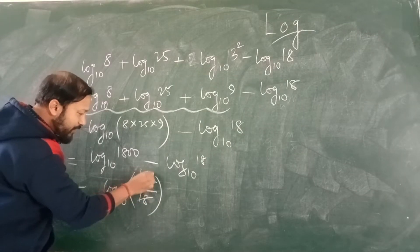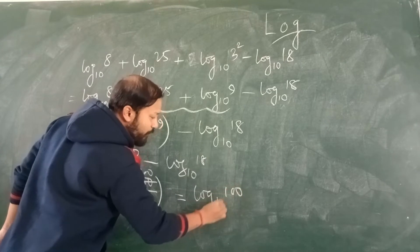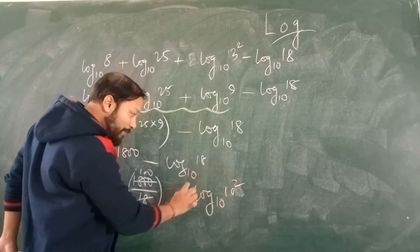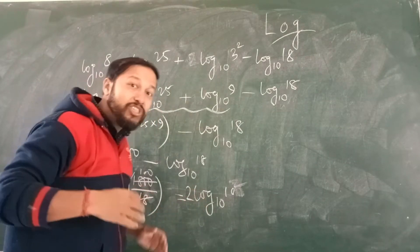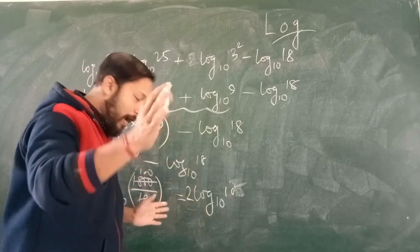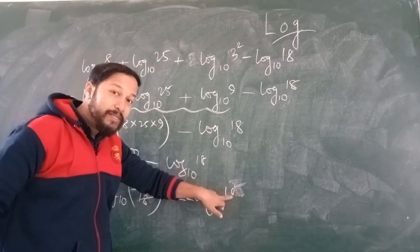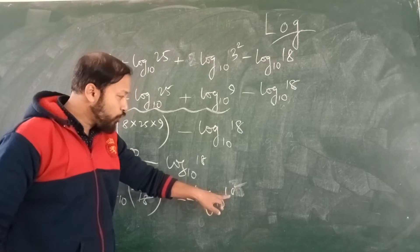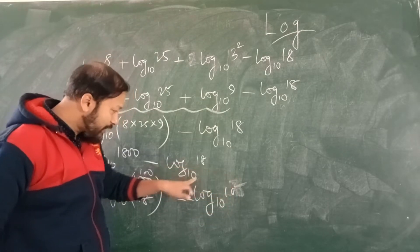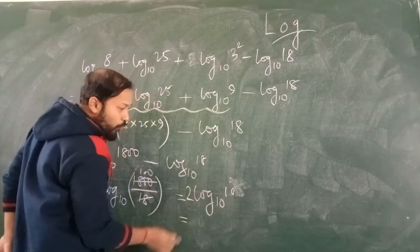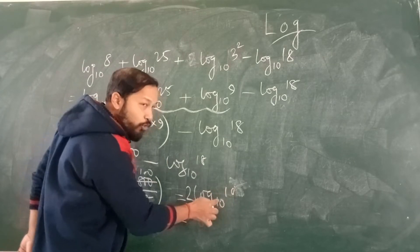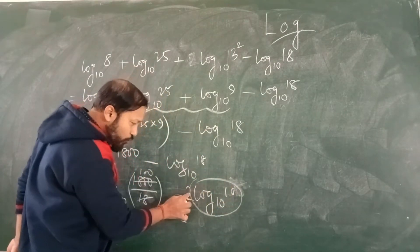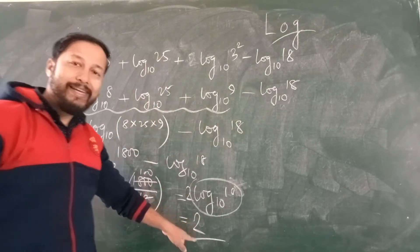Since we have a minus, that means division: I can write log of 1800 divided by 18 to base 10. Dividing 1800 by 18 gives 100. So it is log of 100 to base 10. Now 100 = 10², so the 2 comes out in front. We know that when the argument and base are the same, log equals 1. So 1×2 gives us the final answer of 2.